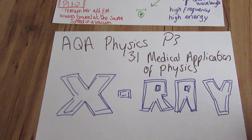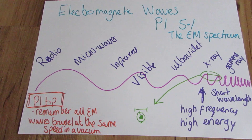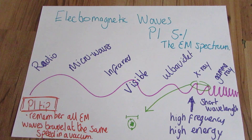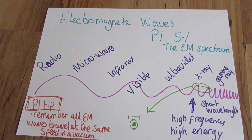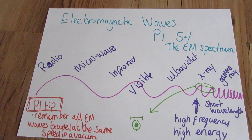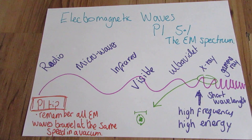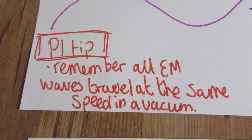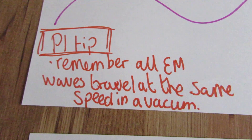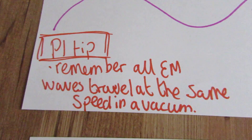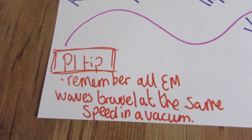First of all, we need to take a rewind back to P1. The last topic in P1 was all about waves, and we are looking at x-rays, which are part of the electromagnetic spectrum. If you haven't taken P1 yet, here is a tip for you: you have to remember that all waves travel at the same speed in a vacuum. This is something people forget a lot.